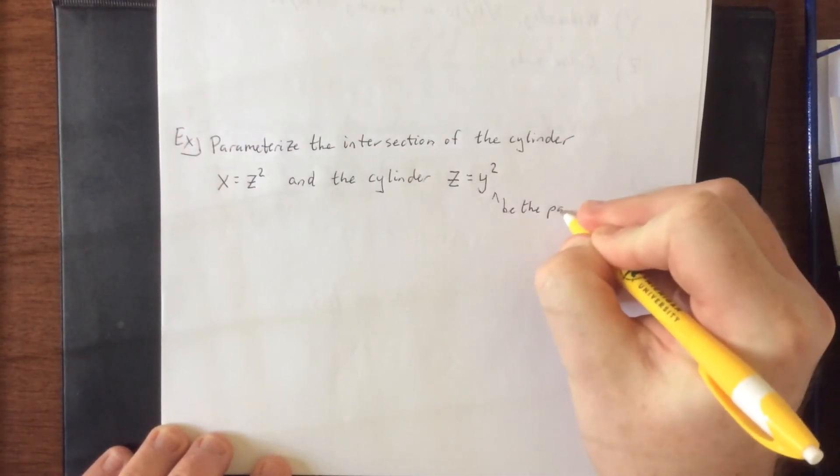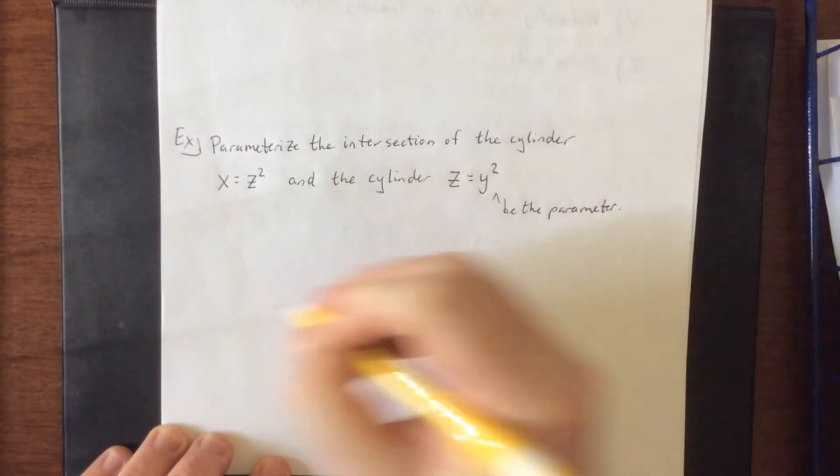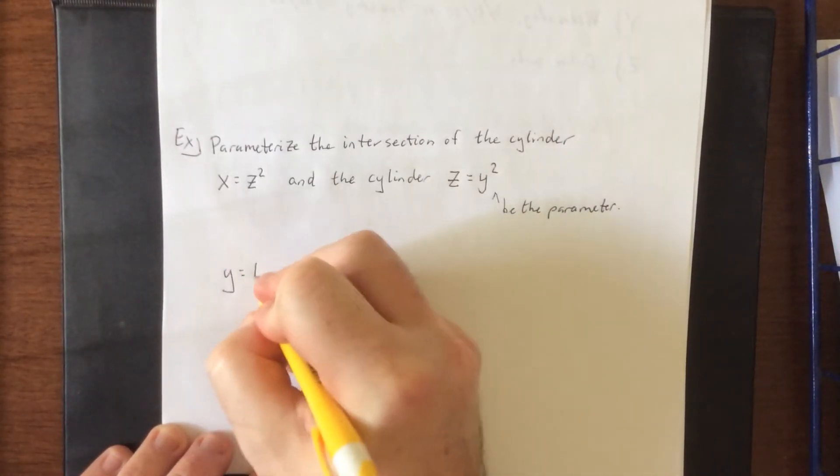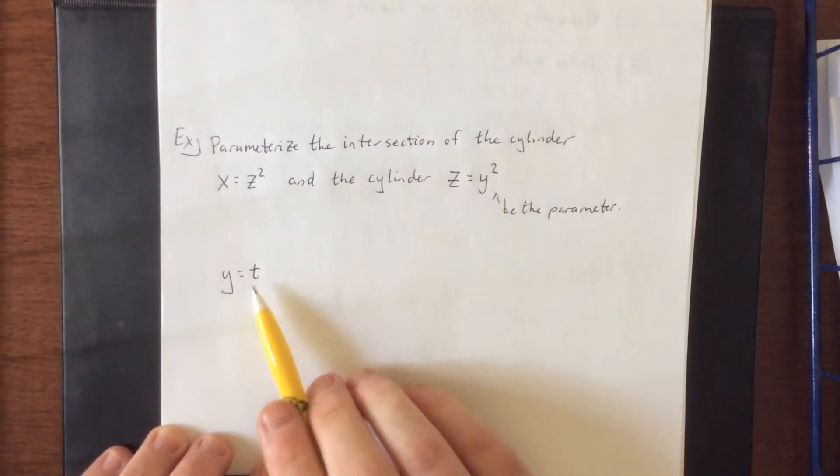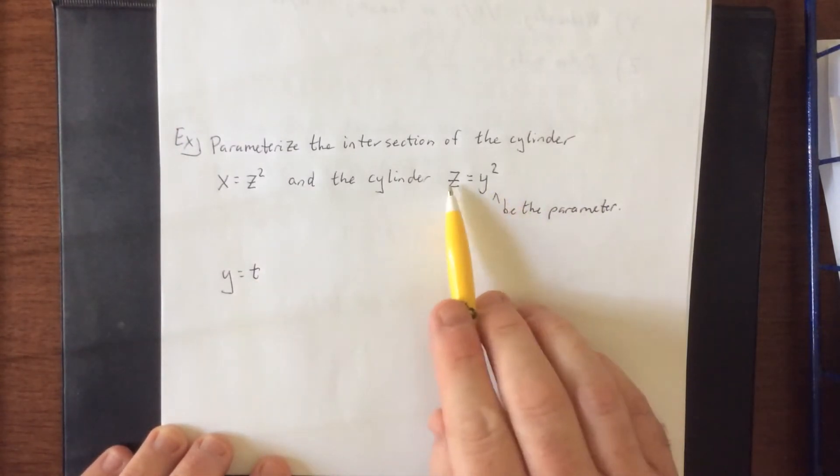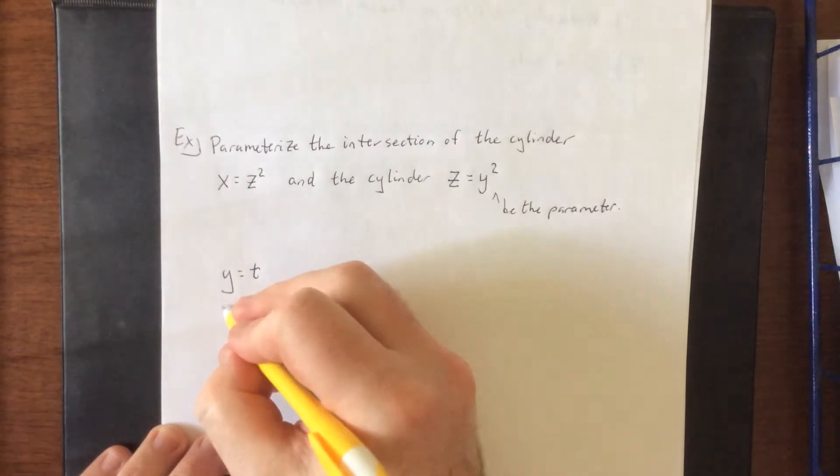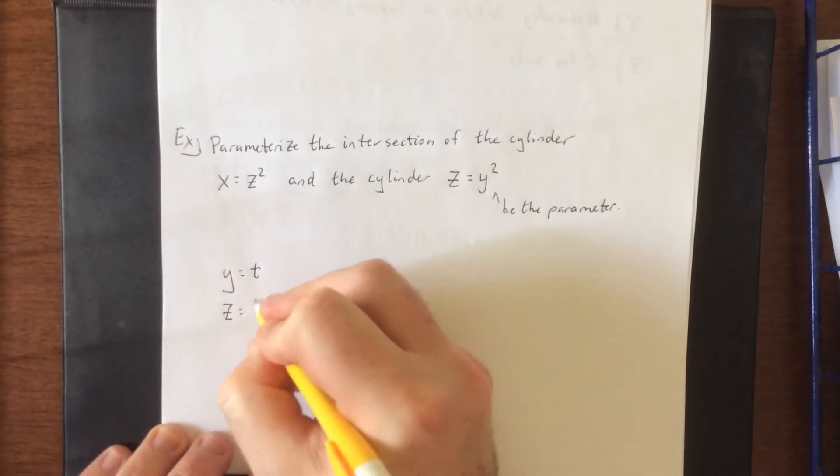Be the parameter. We'll let y be equal to t. Then when I plug in t to the given parameterization, that lets me know that z is going to be equal to t squared. No problem there.